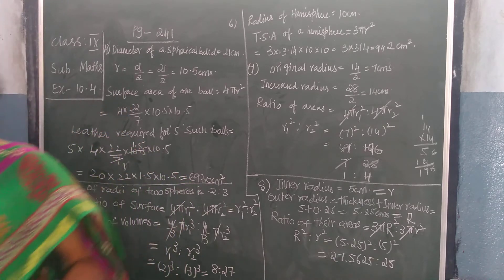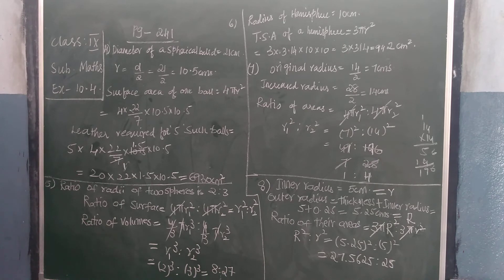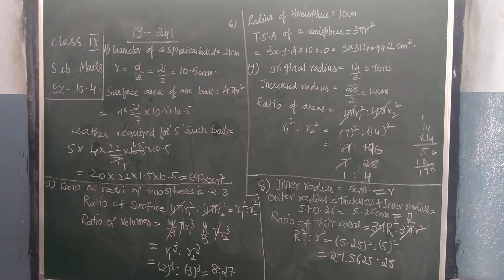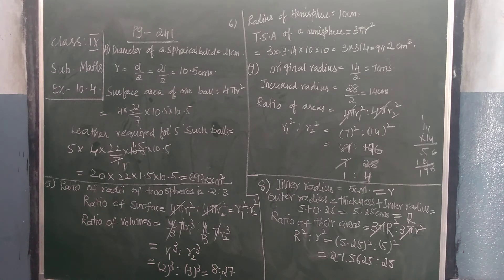Next, what is the 5th question given for you? The 5th question is: the ratio of radius of 2 spheres is given. That is 2 is to 3.